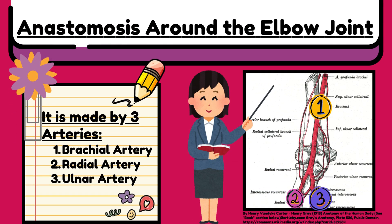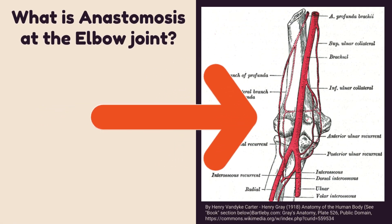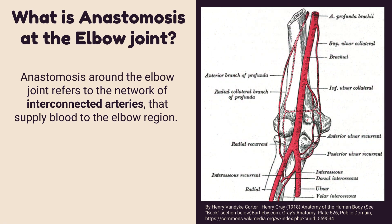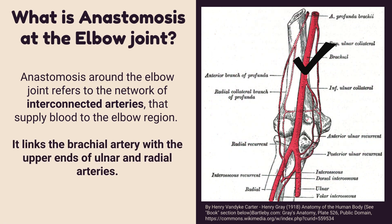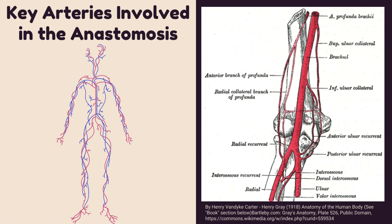In this video, we will talk about the anastomosis around the elbow joint. Anastomosis around the elbow joint refers to the network of interconnected arteries that supply blood to the elbow region. It links the brachial artery with the upper ends of the ulnar and radial arteries.